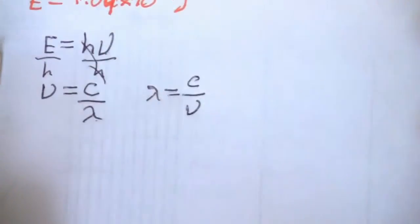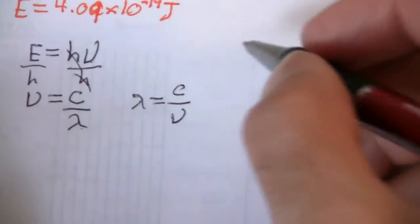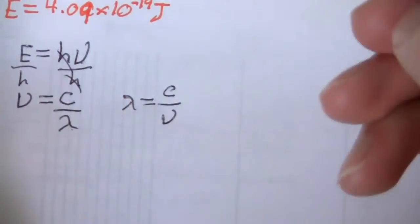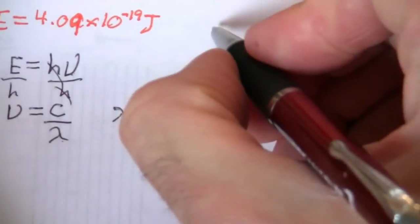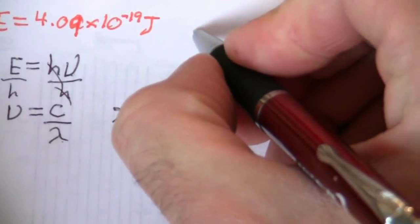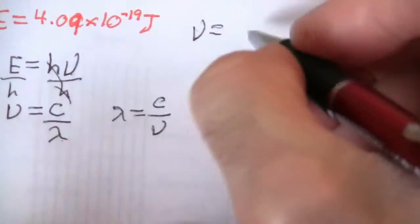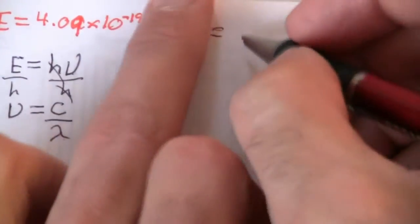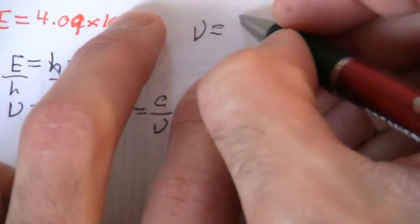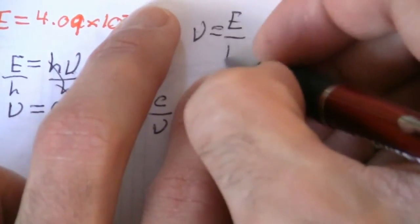So from this equation, if I divide both sides by Planck's constant, it'll cancel here, and I'll have the frequency is equal to E over h. So let me write that here. The frequency is equal to the energy—well, let me write the equation first. E over h, and then I'll say that equals...